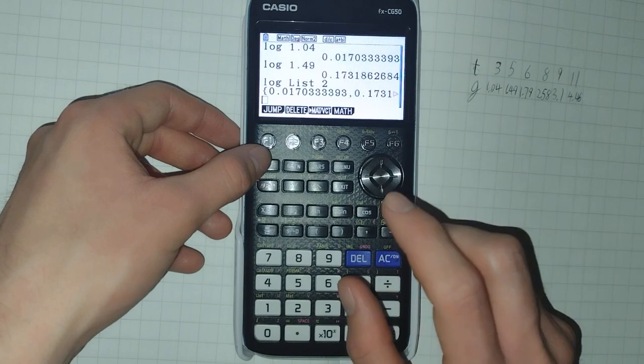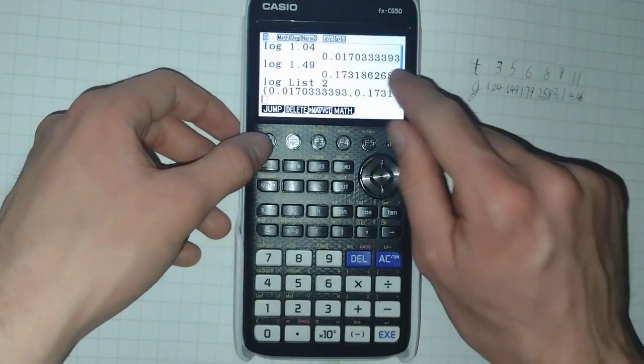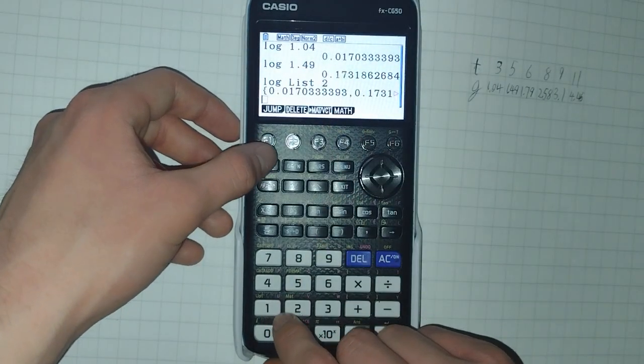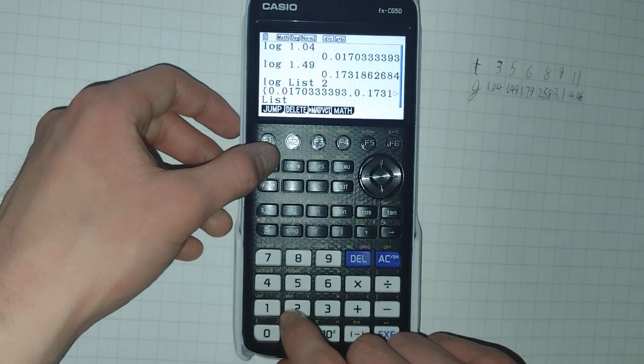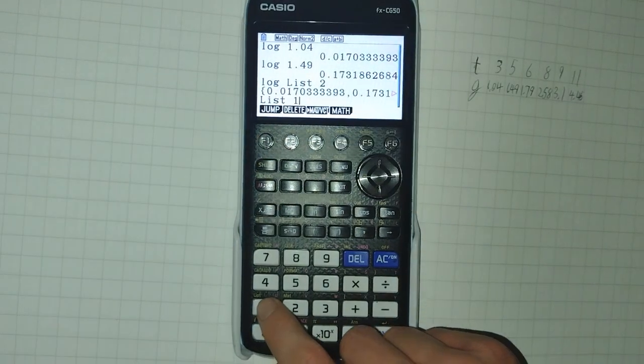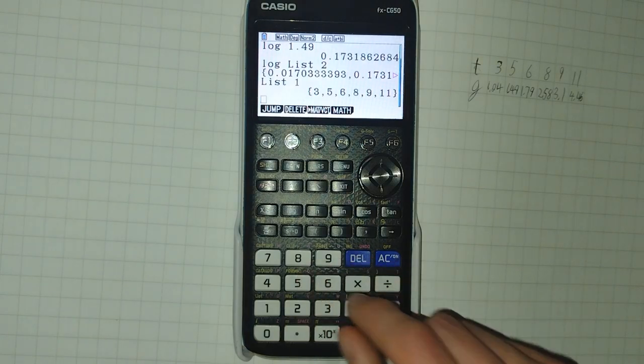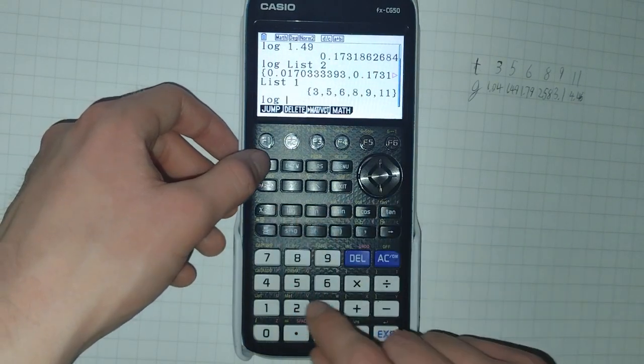So this reveals something else. We can access lists in run matrix by shift one, and then whatever number the list is. And you can do operations on them just as normal as I did up here.